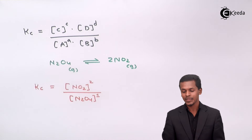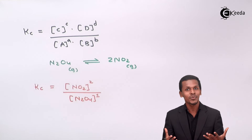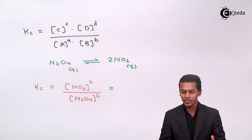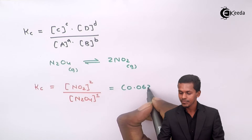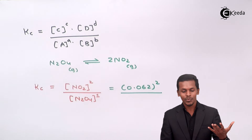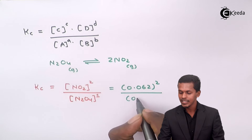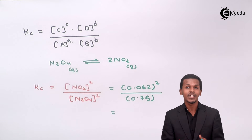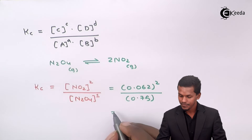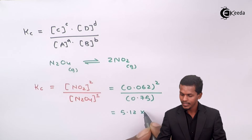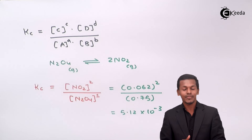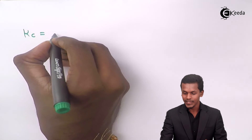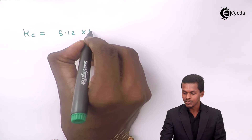Substituting the values: concentration of NO2 is 0.062, squared, divided by concentration of N2O4 which is 0.75. After calculation, we get the value of Kc as 5.12 × 10⁻³.